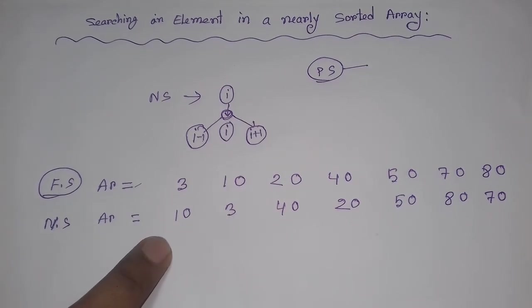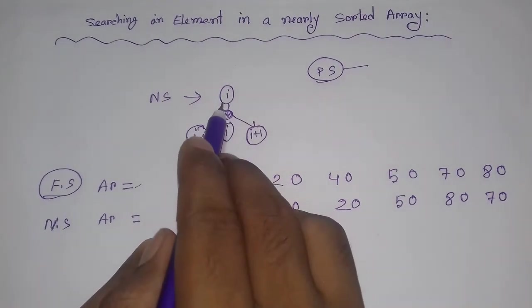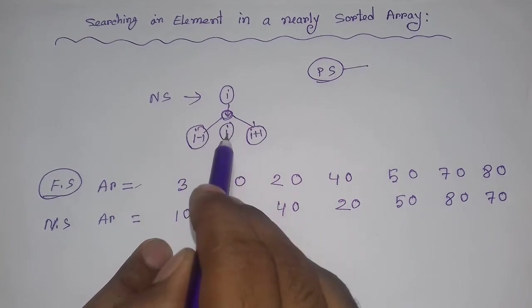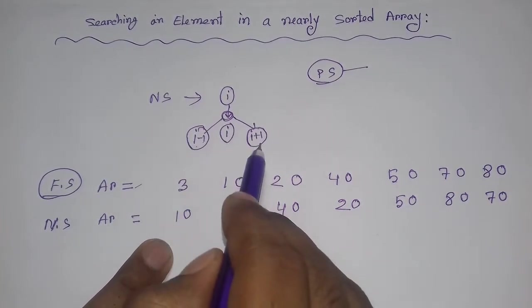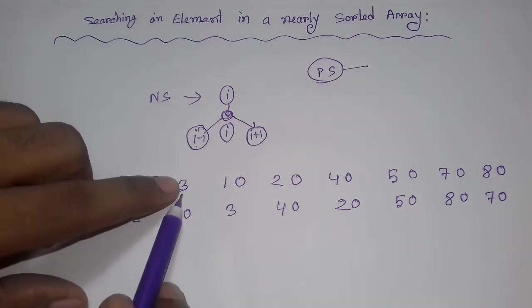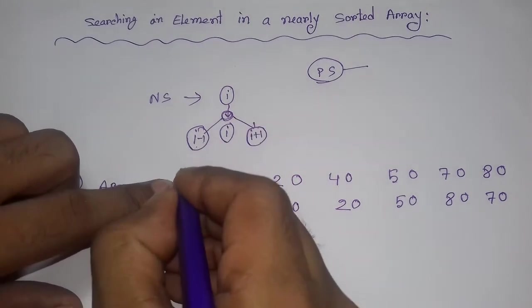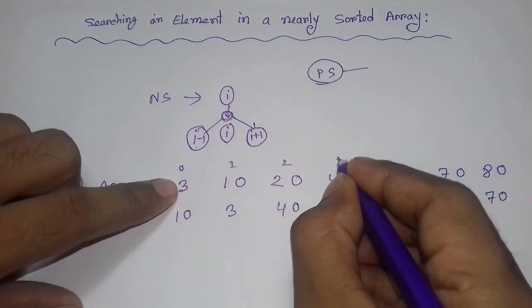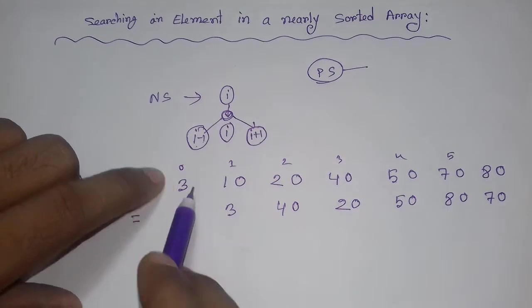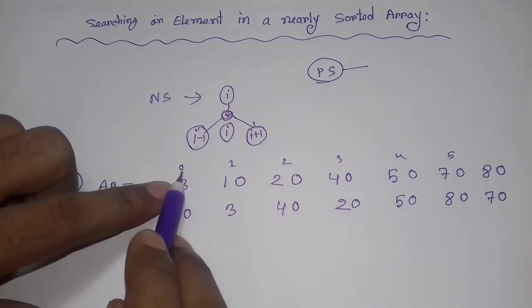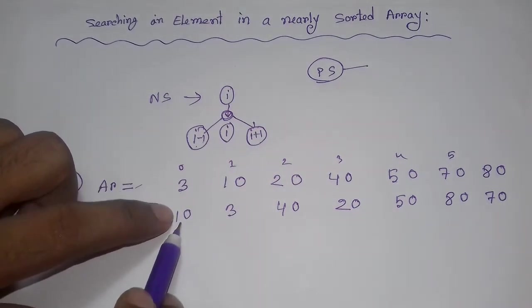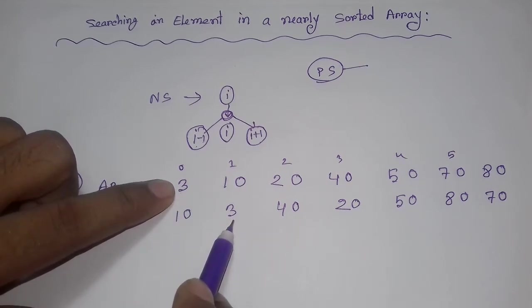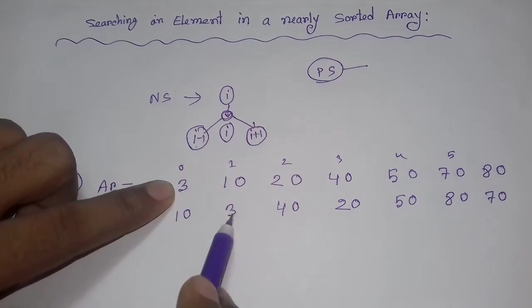We say an array is nearly sorted when each element can be at most one position away from its sorted position. That means for every index i, the element can be at position i, i-1, or i+1. The indices here are 0, 1, 3, 4, 5.